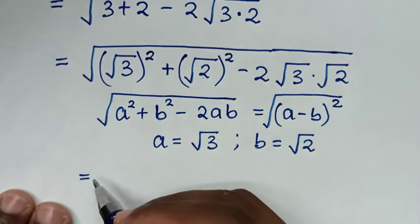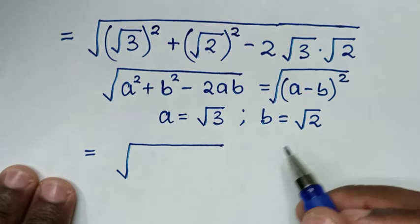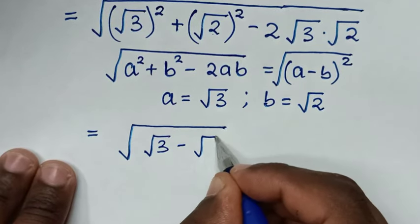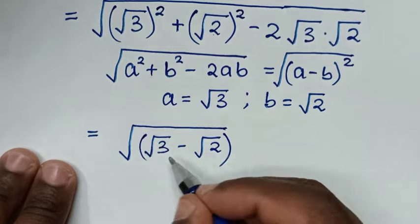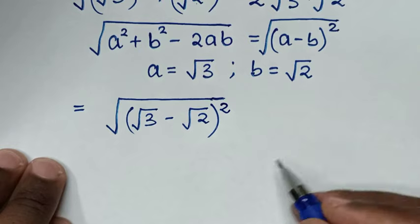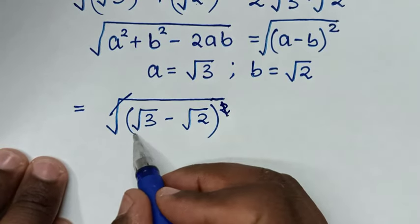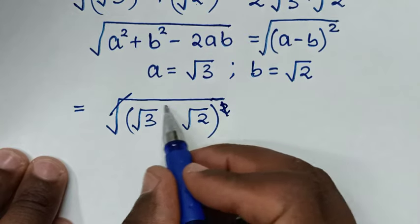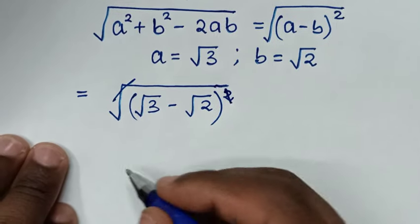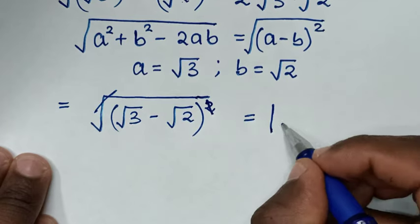So it will be equal to square root of (a − b)², which is square root of (√3 − √2)². Since this square root cancels this square, the value under the bracket should be taken as an absolute value. So it is equal to |√3 − √2|.